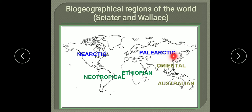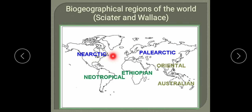In the Palearctic region, the continents are North Europe, Russia, and the Old Himalayas. The Ethiopian region includes all the African countries. The Oriental biogeographical region includes South Asia including India. The Australian region includes Australia and New Zealand. The Nearctic region has North America, and the Neotropical region has South America.